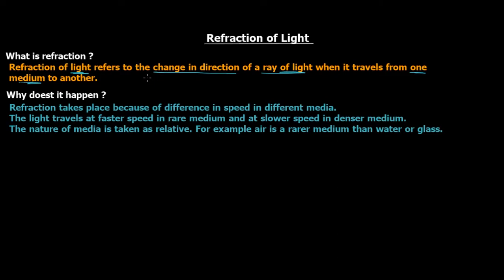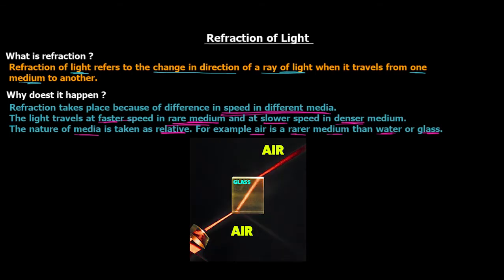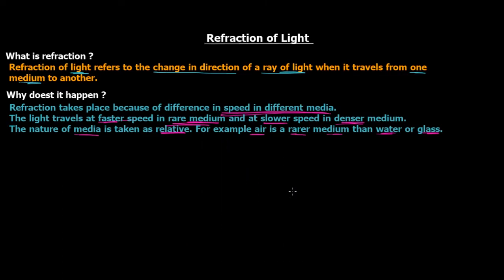Why does refraction happen? Refraction takes place because of the difference in speed of light in different media. Light travels at faster speed in a rarer medium and at slower speed in a denser medium. The nature of media is relative — for example, air is rarer than water or glass. In the laser example, the speed in air is higher than in glass, and this difference in speed is what causes the change in direction.